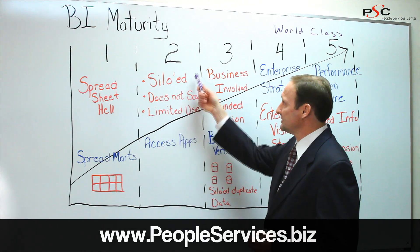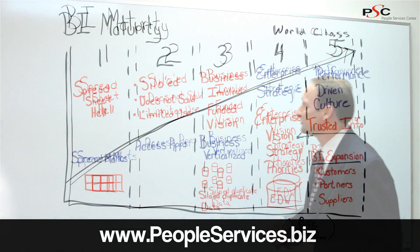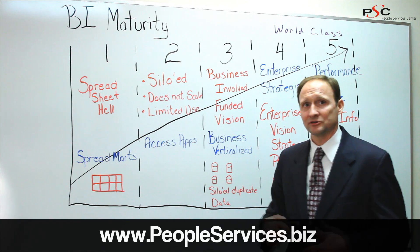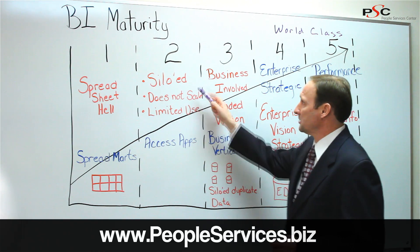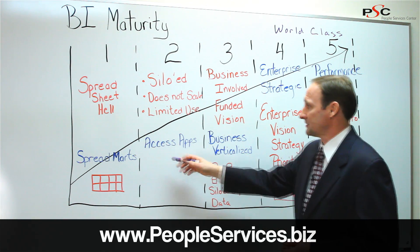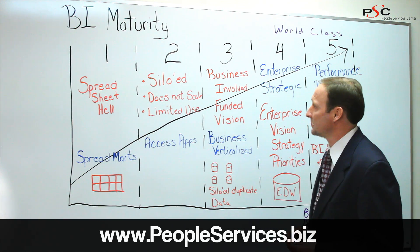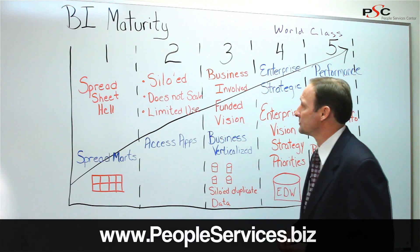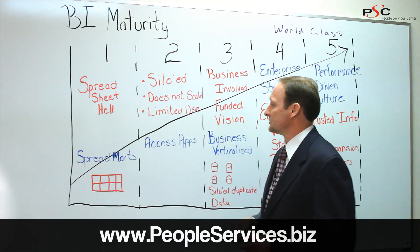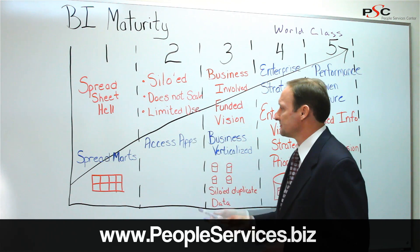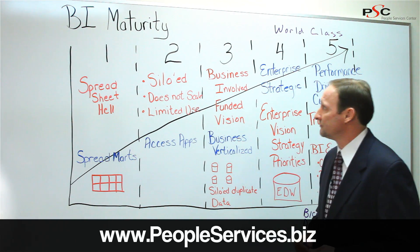The challenge in phase two is that there are often still siloed applications. These access applications are designed for business areas but they're siloed. They're often not supported by IT because IT doesn't like distributed applications. They don't scale, don't support lots of users, and are often just limited-use applications.